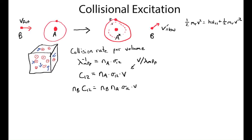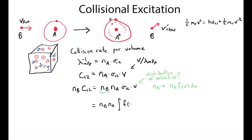The problem is we've assumed a single velocity, but what if the B particles have a distribution of velocities? In that case, N_B must become the total number density of B times some function f(v) describing the relative abundance of particles at different velocities, integrated over a differential velocity interval. So we integrate over the fractional population at each velocity times the cross-section — which can be velocity-dependent — times the velocity factor.